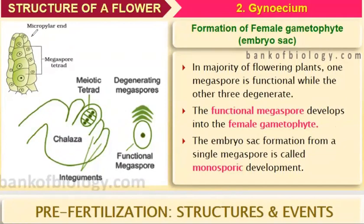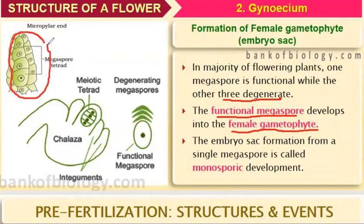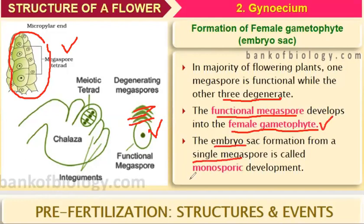In the majority of flowering plants, one megaspore is functional while the other three degenerate. The functional megaspore develops into the female gametophyte. This embryo sac forms from a single megaspore, and this process is called monosporic development.